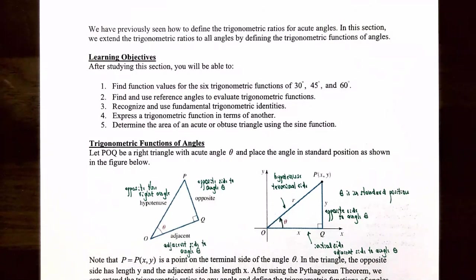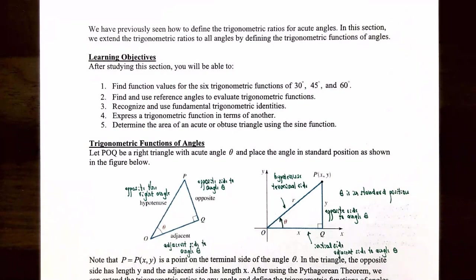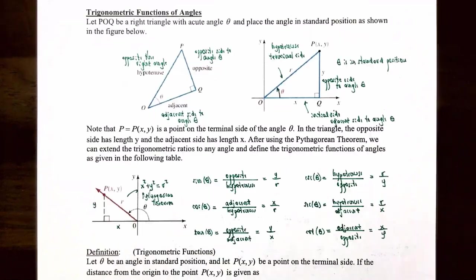In this video we're going to talk about how to find function values for the six trigonometric functions of 30 degrees, 45 degrees, and 60 degrees, or their equivalents in radians: pi over 6, pi over 4, and pi over 3 radians. We're also going to find and use reference angles to evaluate trigonometric functions.